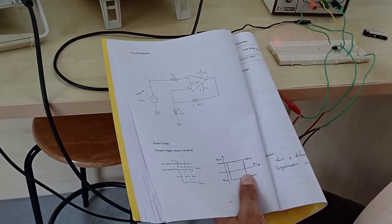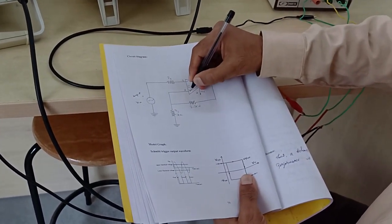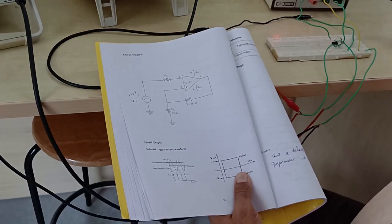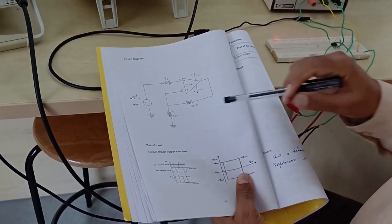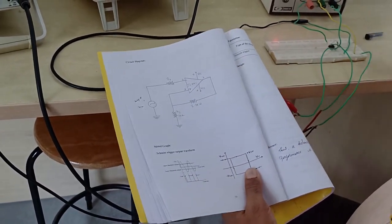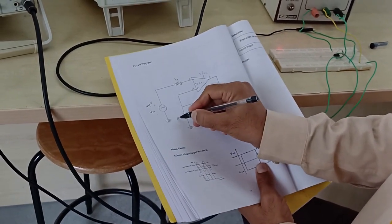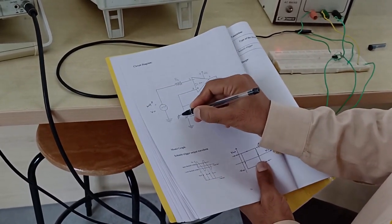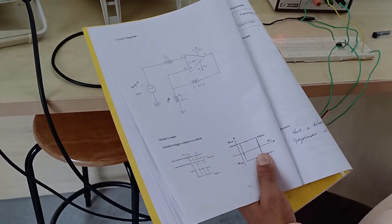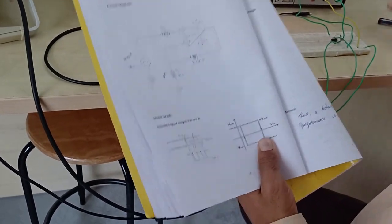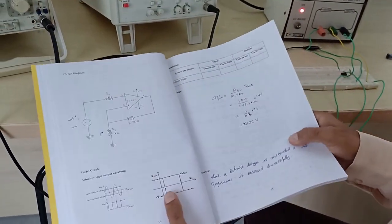The input is connected in the second pin inverting, and third pin non-inverting is connected to the feedback and ground. This will give the UTP and the LTP at R2. The voltage across R2 is UTP and LTP. This is calculated using voltage divider rule.